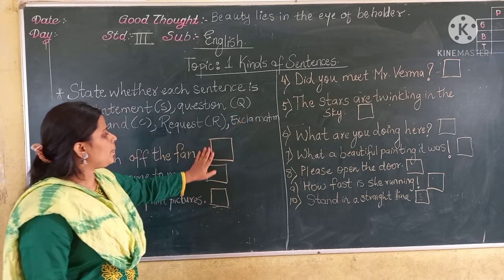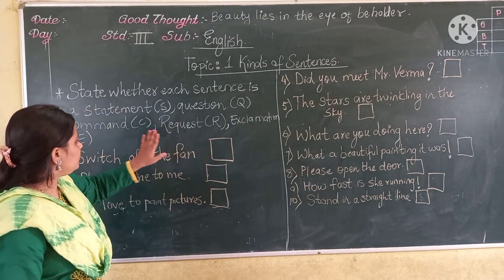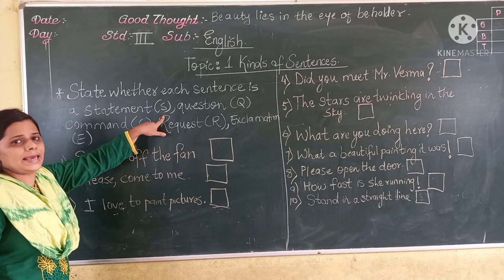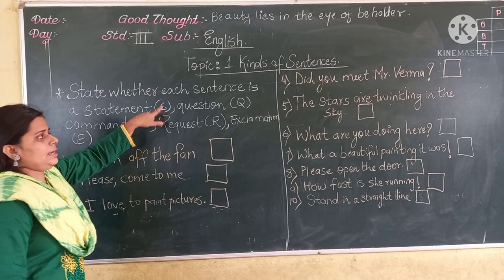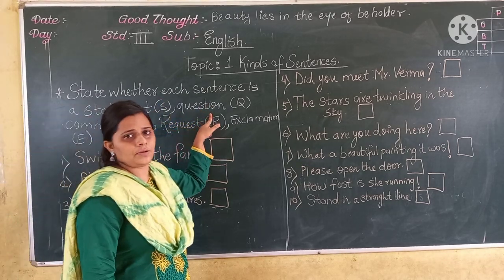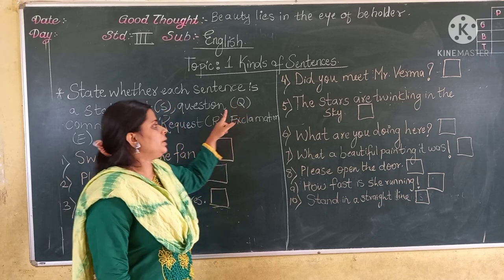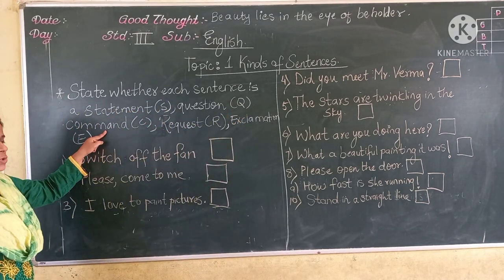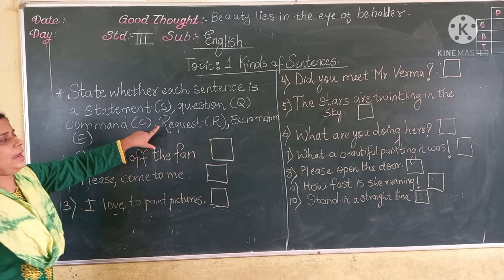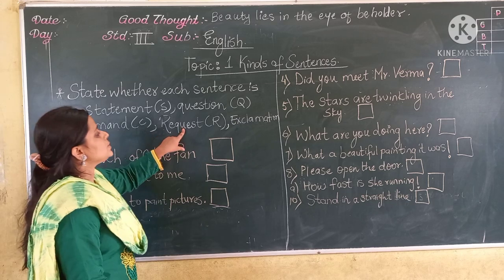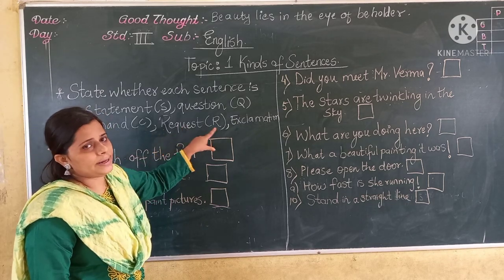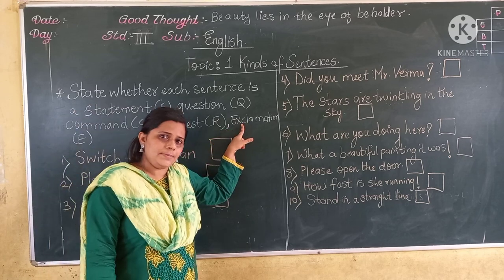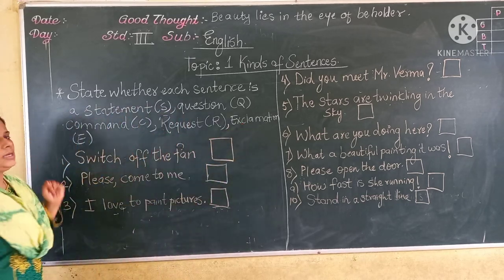Now students, a box is given for each sentence. If the sentence is a statement, we have to write S. If the sentence is a question, we have to write Q. If the sentence is a command, we have to write C. If the sentence is a request, we have to write R. And if the sentence is an exclamation, we have to write E.